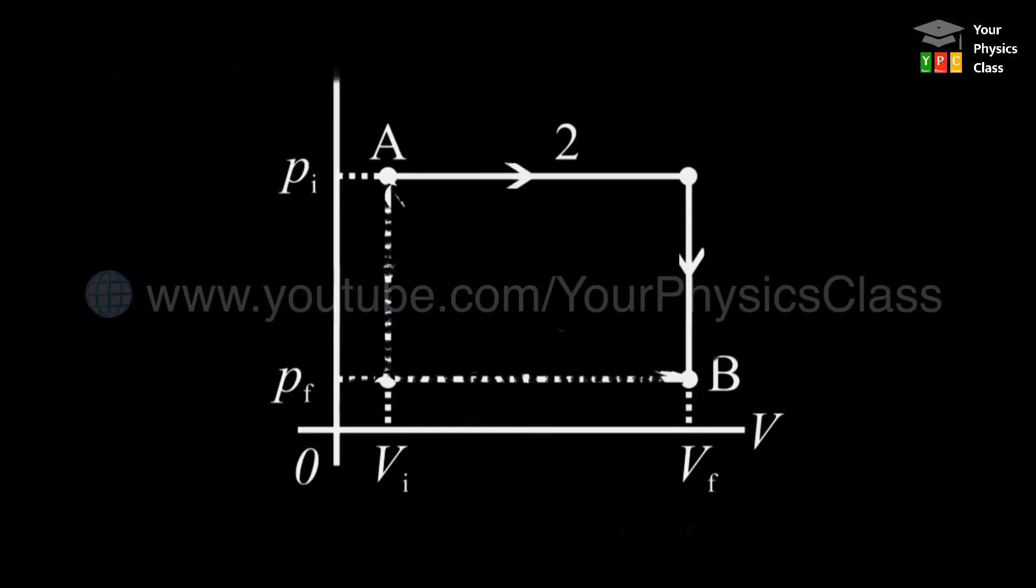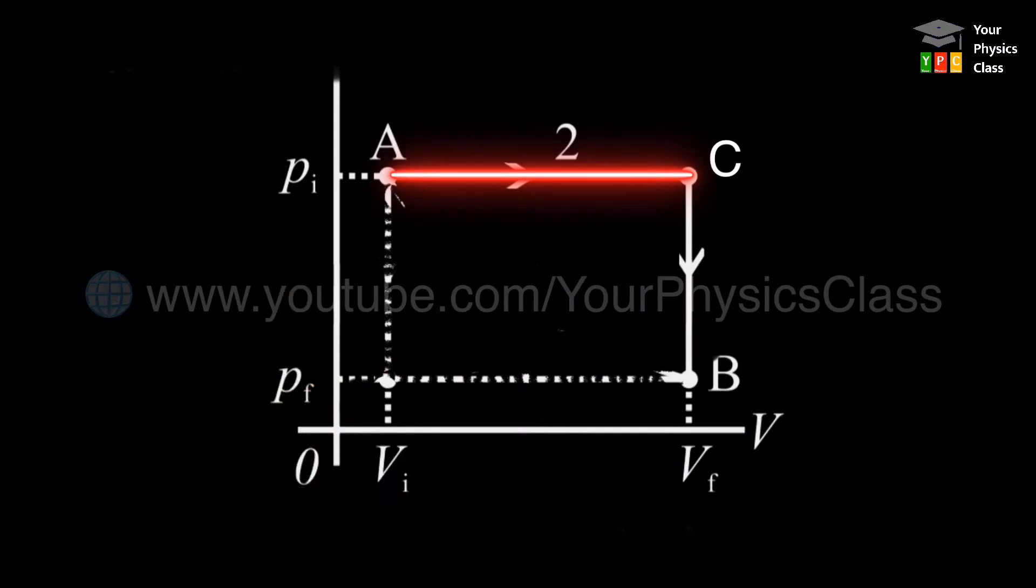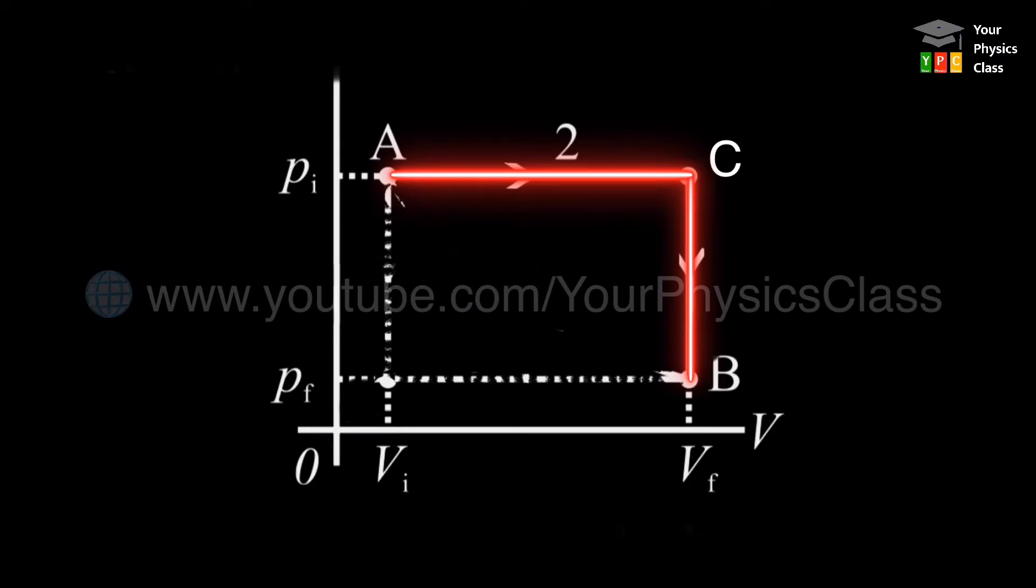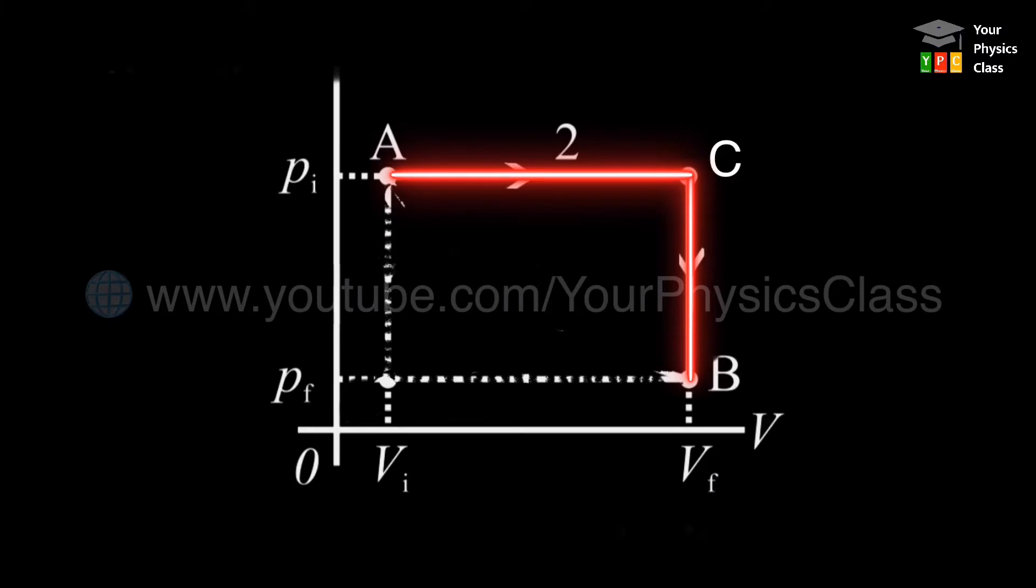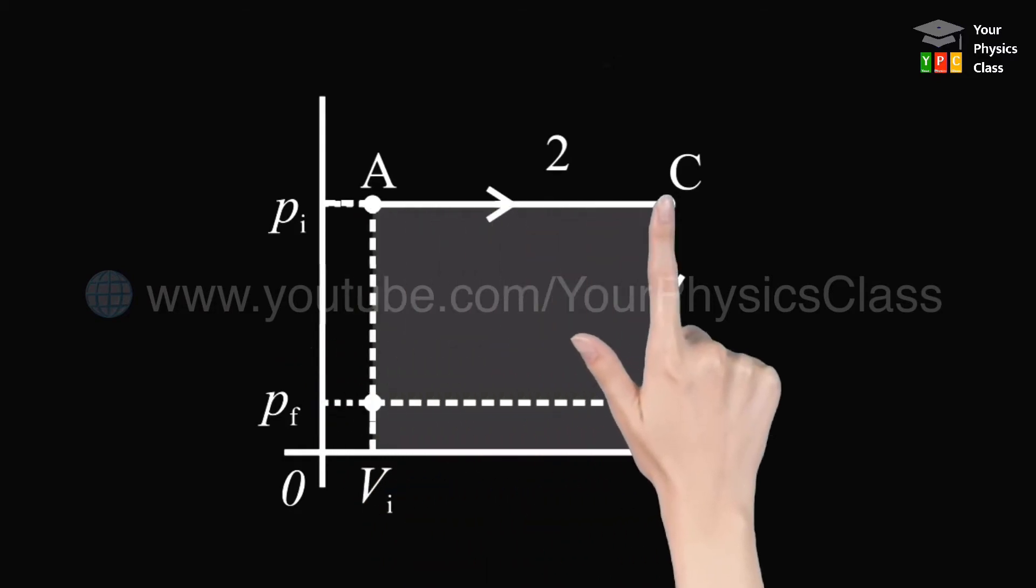In the second way, the state from A to B is shown by path 2. In this case, volume increases to VF from point A up to point C at a constant pressure PI. The pressure then decreases to PF as shown. The volume remains constant during this change. The system is now in state B with coordinates given by VF, PF. The work done in this process is represented by the shaded area under curve 2.